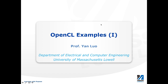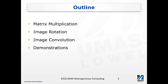Hello, welcome to our class Heterogeneous Computing. Today I'm going to talk about OpenCL examples. This is the first of three sessions we will use OpenCL examples to show you how to solve problems using OpenCL programming. In today's lecture we're going to look at three examples: matrix multiplication, image rotation, and image convolution. For each of these three examples, we'll show through demonstrations how the OpenCL program is designed, compiled, and executed.